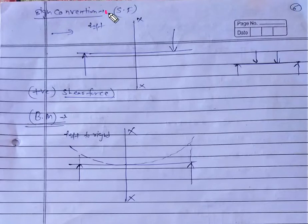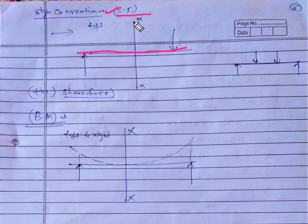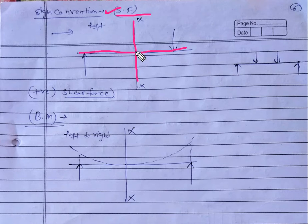Sign convention in the case of a shear force: this is a beam, and we take this section XX — the cut section at which we are interested to find out the shear force at this point. If we are approaching from left to right, we take a left-to-right approach.